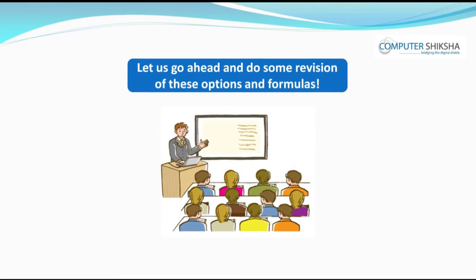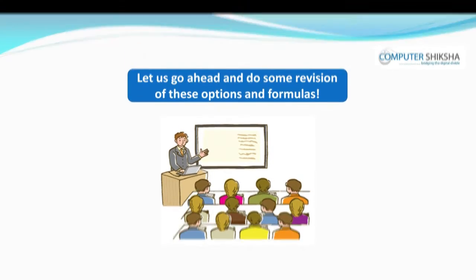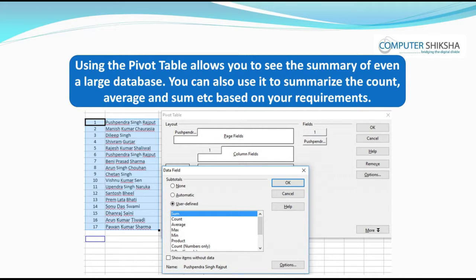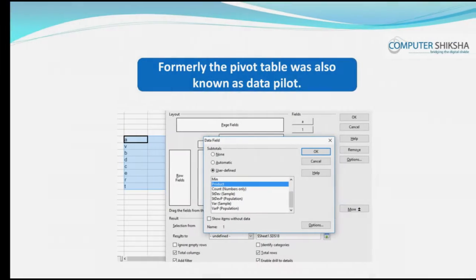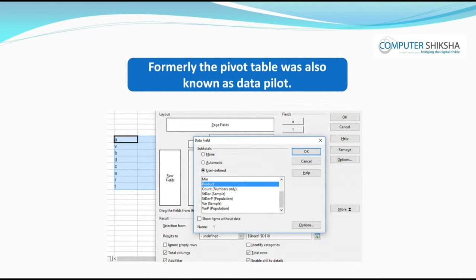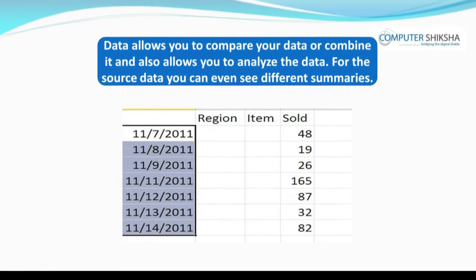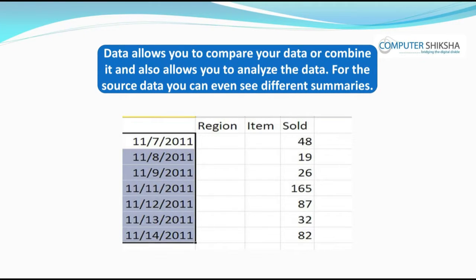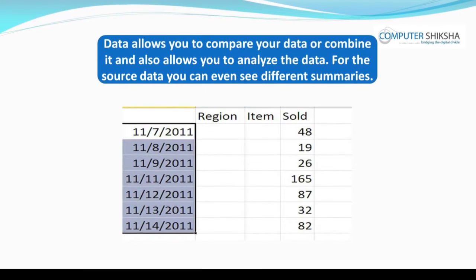Let us go ahead and do some revision of these options and formulas. Can you tell why the pivot table is used? Using the pivot table allows you to see the summary of even a large database. You can also use it to summarize the count, average, and sum based on your requirements. Formerly, the pivot table was also known as Data Pilot. It allows you to compare, combine, and analyze your data, and you can see different summaries for the source data.